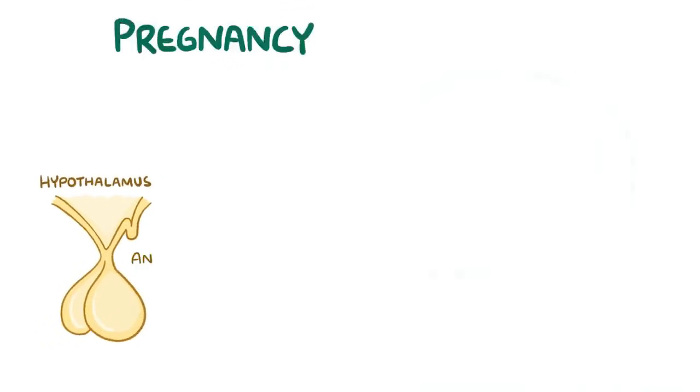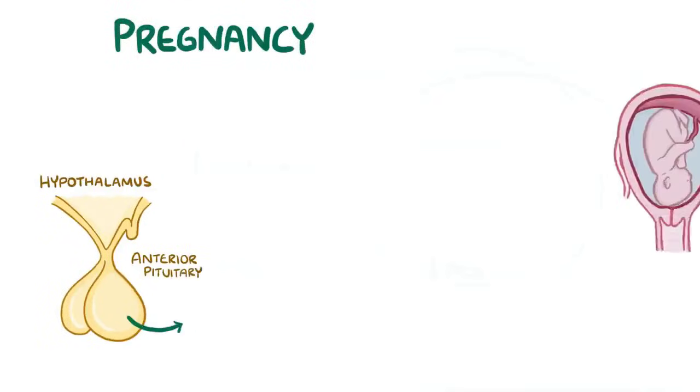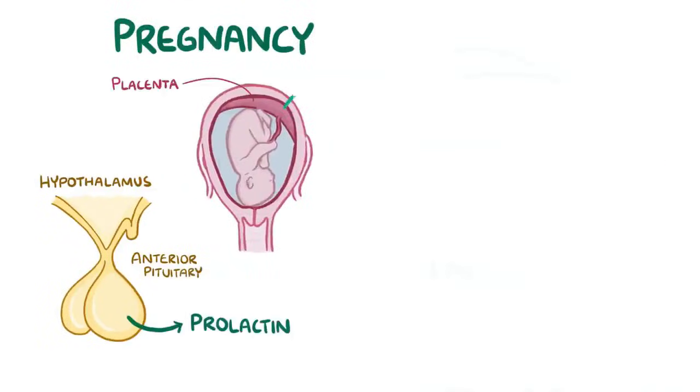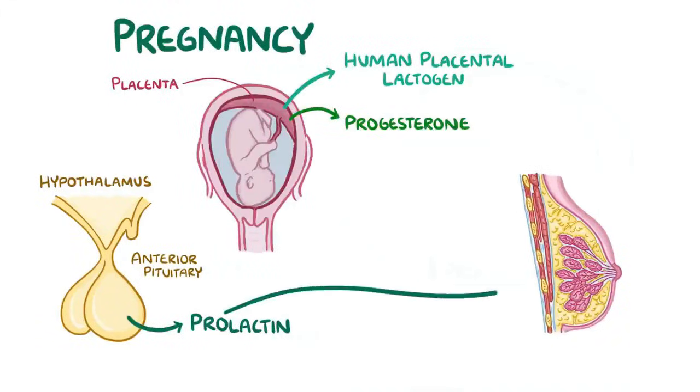Now, during pregnancy, the anterior pituitary gland releases prolactin, and the placenta releases human placental lactogen and progesterone. And all three of these hormones stimulate the growth of more glandular tissue in the breast to produce milk.